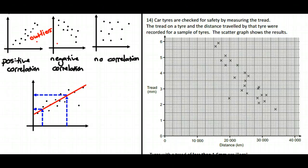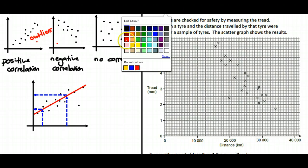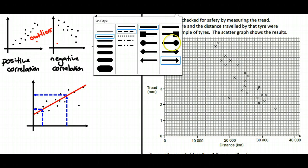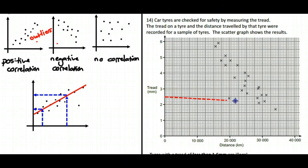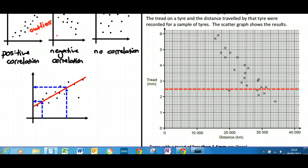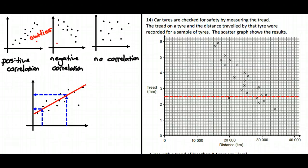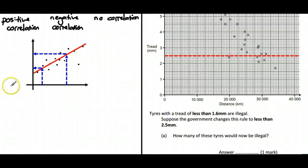We need to identify where our 2.5 is and ask how many would be illegal. Well, that would be the number of points below that line, and that appears to be 1, 2, 3, 4, 5.